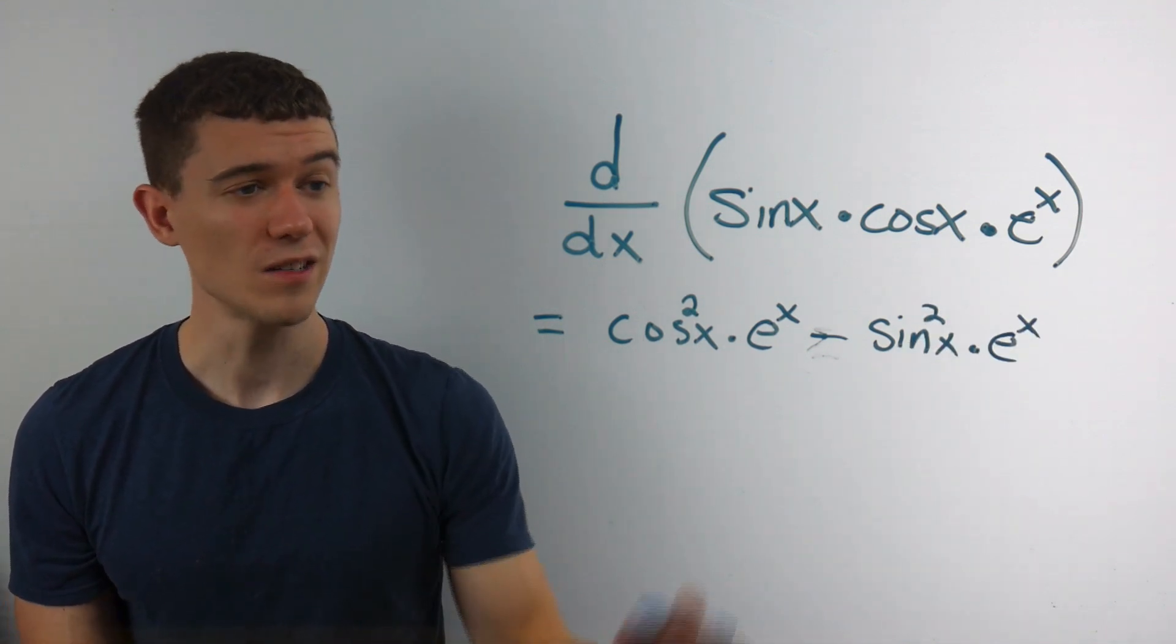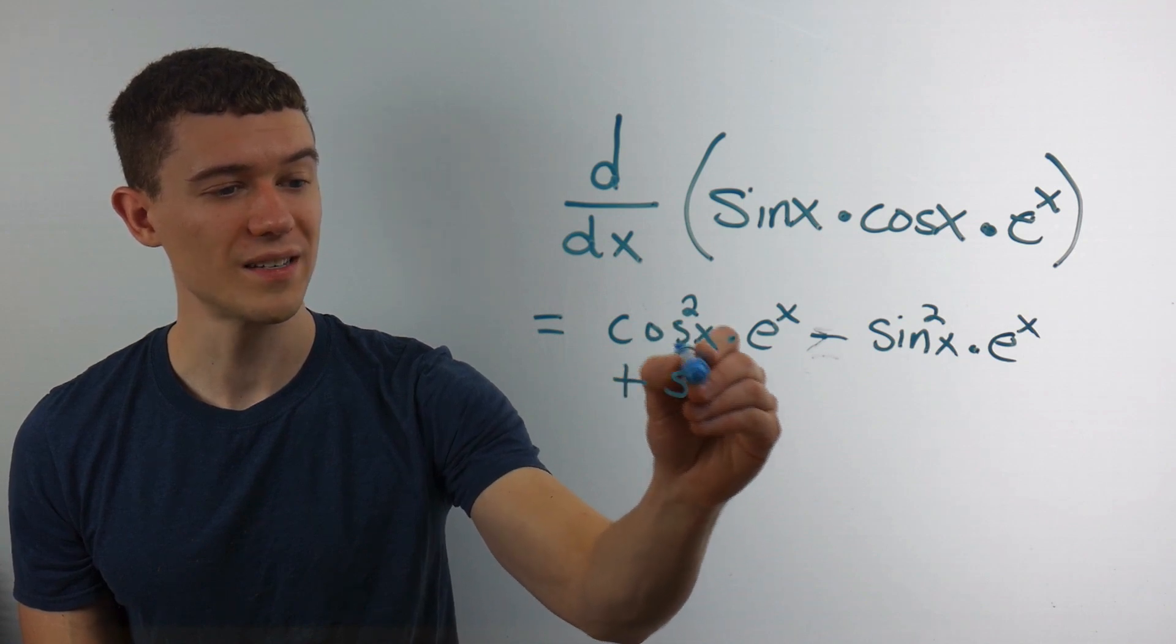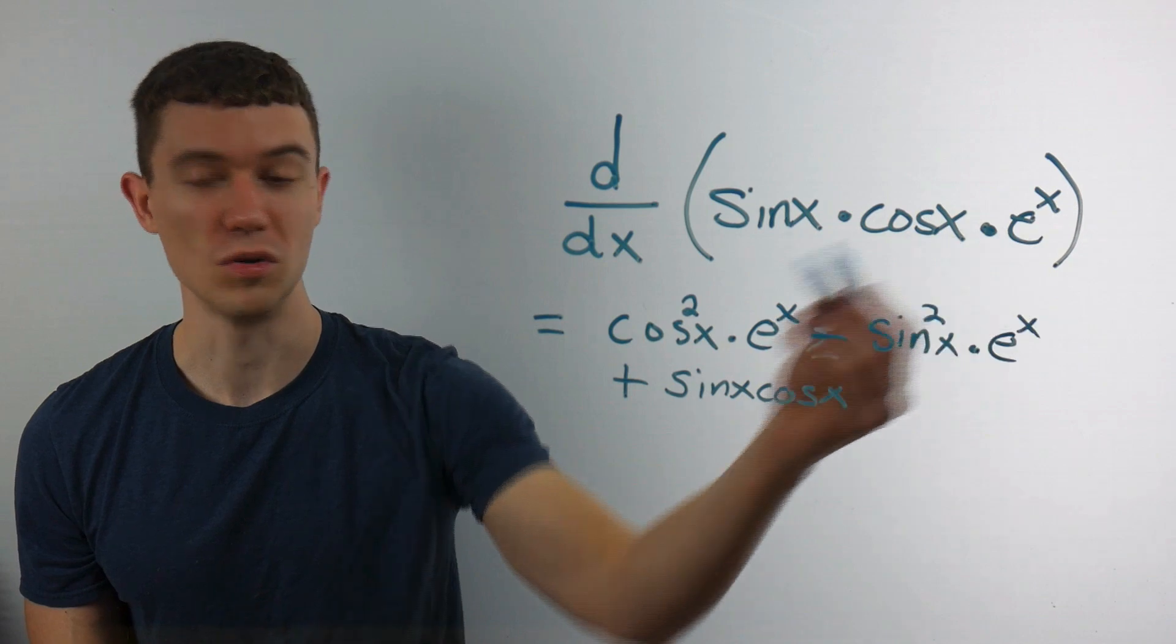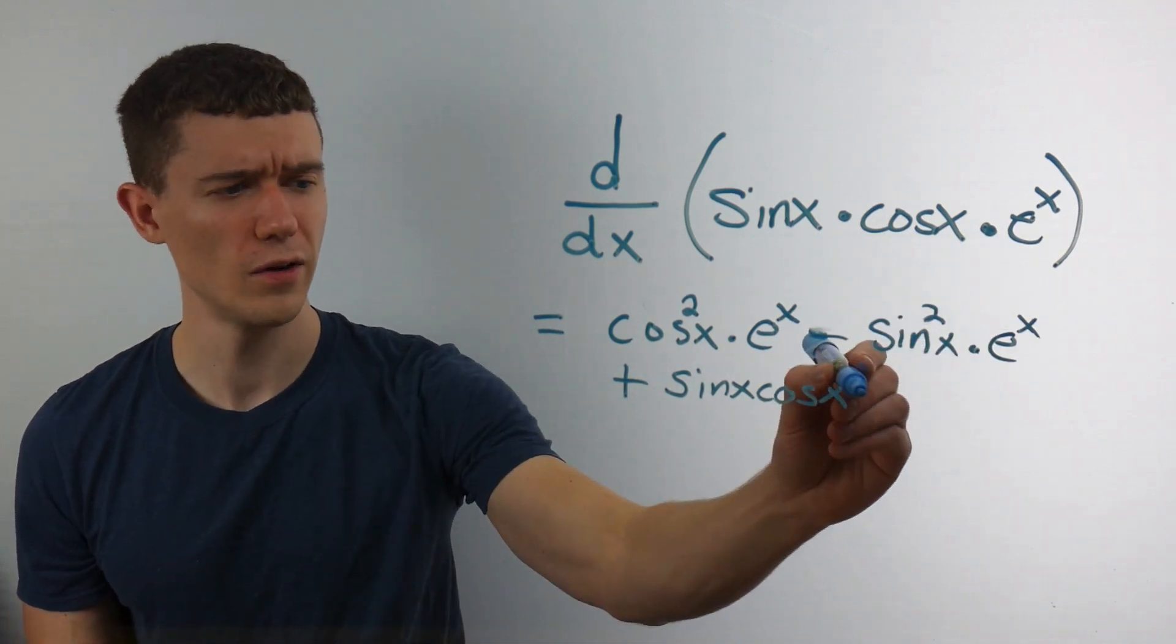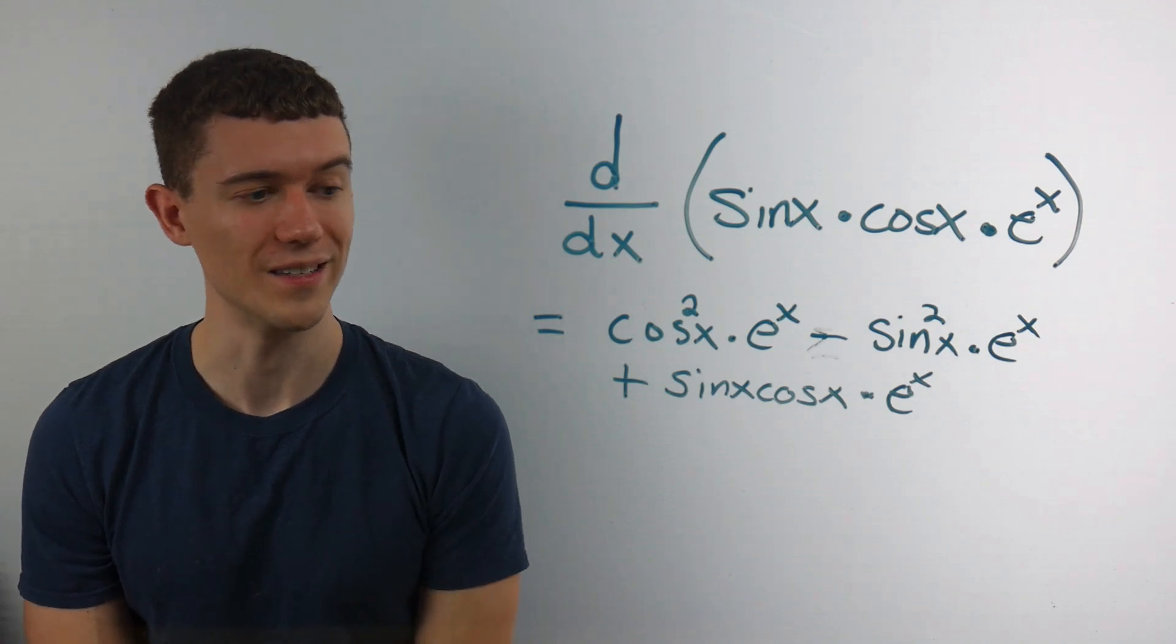And then just like you would expect, we have copying the other two functions. So it's plus sine x cosine x. And then we multiply by the derivative of the third function. The derivative of e to the x is itself. No work at all. How nice is that?